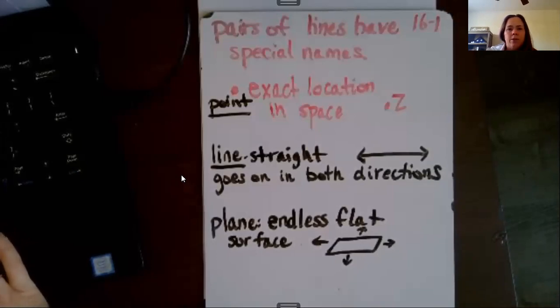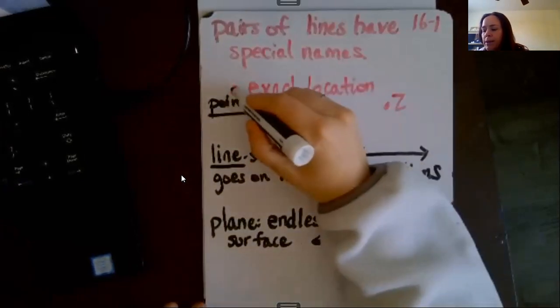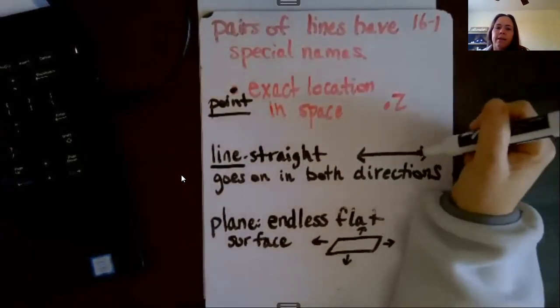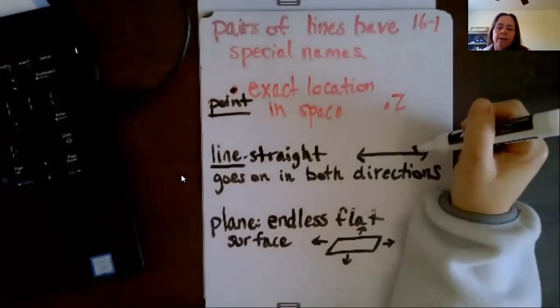So it's just knowing the different names of points and shapes. Lesson 16.1 is about pairs of lines that all have special names. The most basic thing is a point, which is an exact location in space.